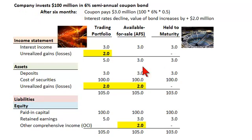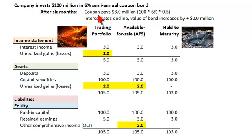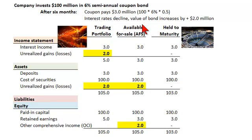The illustration here, to show the differences, is the assumption that we have a company that invests $100 million in a 6% semi-annual coupon bond. We go forward in time six months and two things happen. First, that bond pays a coupon of $3 million — that's 6% times $100 million, or $6 million per year, paying semi-annually. Second, interest rates decline, so the value of our bond goes up by $2 million.